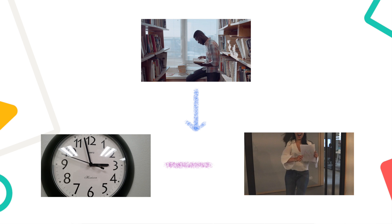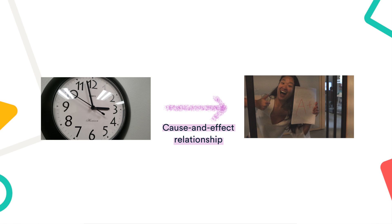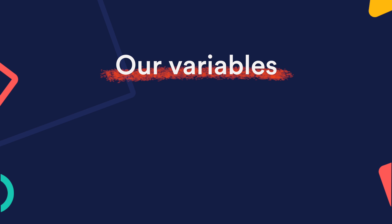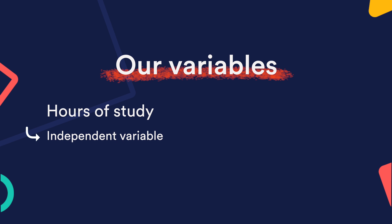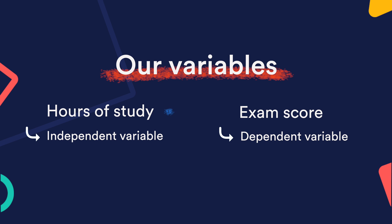Based on what we've learned from our literature review, we think that studying more hours will cause a higher exam score. We want to test whether there is a cause and effect relationship between the amount of hours you study and the exam score you get. That means hours of study is our independent variable, and exam score is our dependent variable, because we think that exam score depends on hours of study.